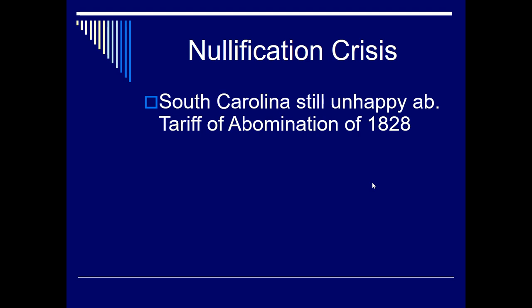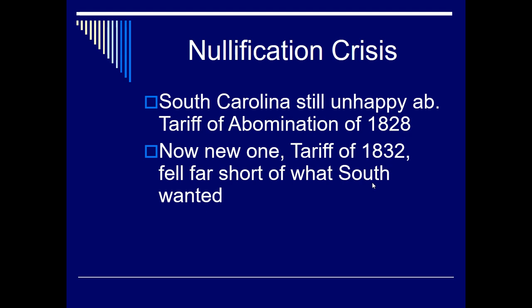What ends up happening is there is another tariff in 1832, under Jackson. The first tariff of abominations started at the end of John Quincy Adams's presidency, but Jackson is the one who has to deal with it. In 1832, Andrew Jackson is president when a new tariff is passed — essentially a 35% tariff — but it still falls short of what South Carolina and the South want. And so this is the nullification crisis.